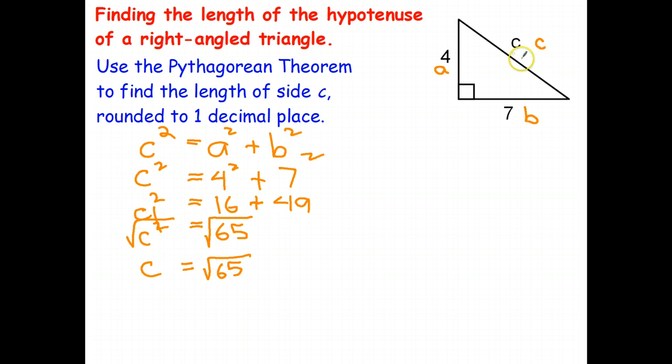The length of the hypotenuse of this right-angled triangle is the square root of 65 units, and that is the exact answer.